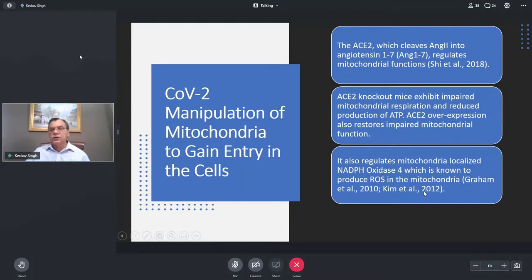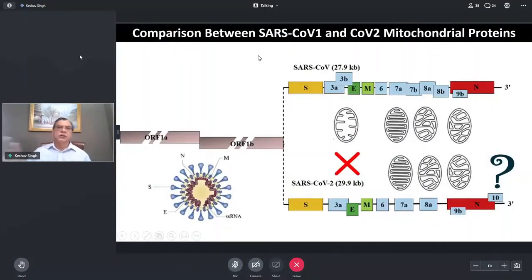Then there's a connection to the regulation of the NADPH oxidase. And in fact, in 2012, we showed, our laboratory showed the NADPH oxidase localizes to mitochondria, and NADPH oxidase is a key player in producing reactive oxygen species in the mitochondria beside the electron transport chain. So the overall picture is that in the context of COVID-2, it seems to be directed many of the events toward the mitochondria.